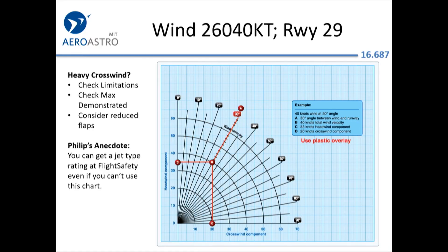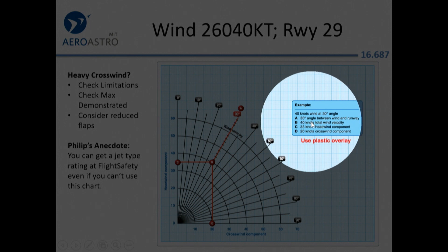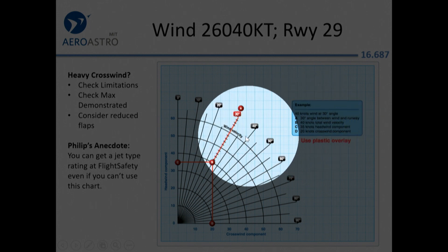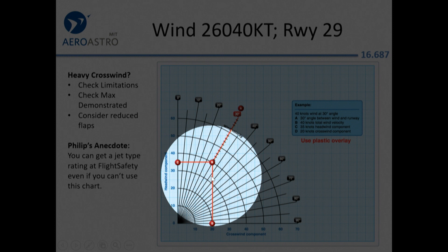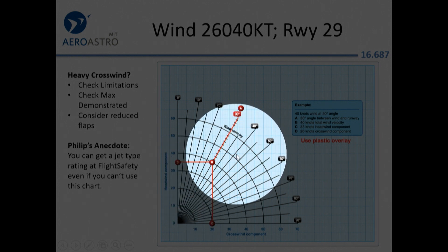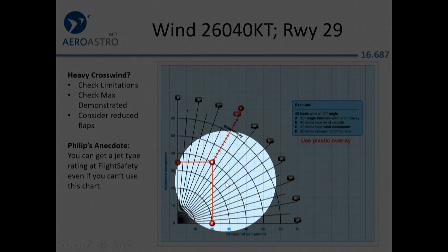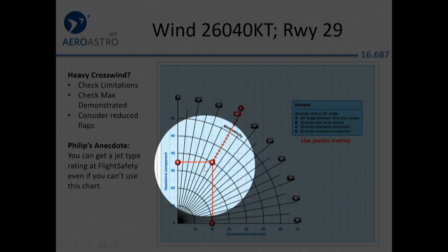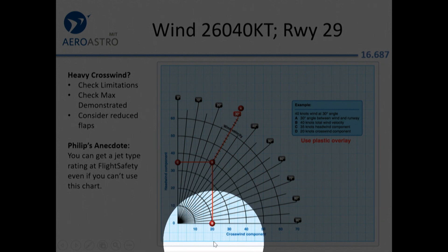Crosswind chart: if you have a 40-knot wind at a 30-degree angle, you go to the 30-degree line on the chart, use the 40-knot ring, and find that it's a 35-knot headwind component and a 20-knot crosswind component.